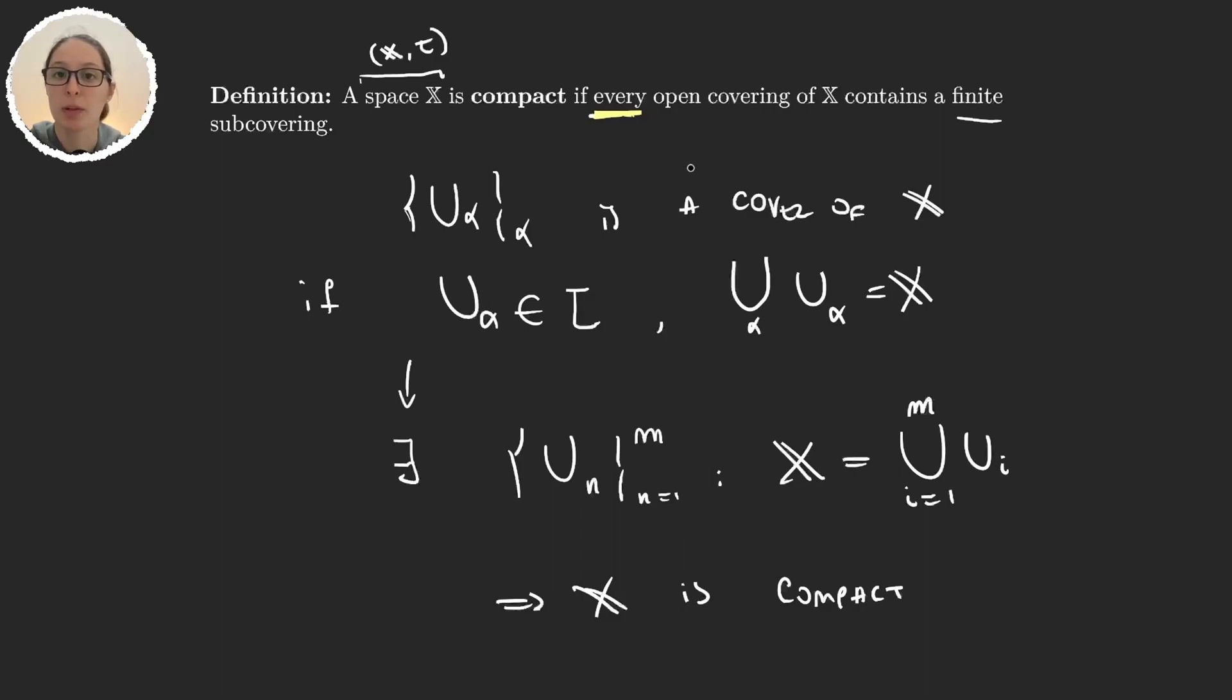So it is very complicated to prove if a space is compact or not. But to prove if a space is not compact, then all we need to do is find one covering for which there is no finite subcovering.